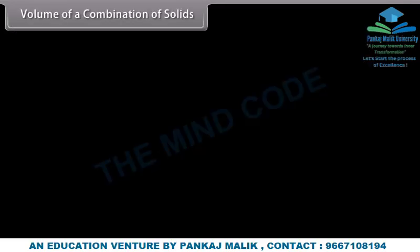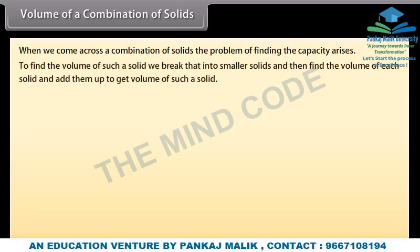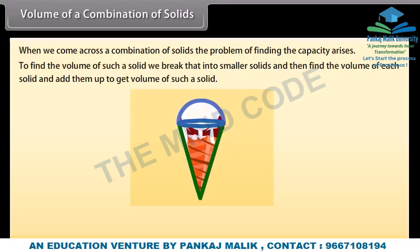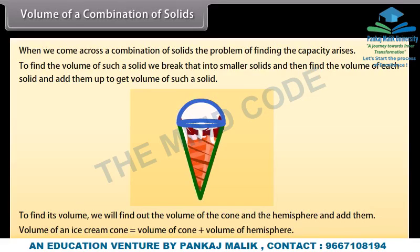Volume of a combination of solids: When we come across a combination of solids, the problem of finding the capacity arises. To find the volume of such a solid, we break it into smaller solids and then find the volume of each solid and add them up. Look at this ice cream cone — it is a combination of a cone and a hemisphere. Volume of the ice cream cone = volume of cone + volume of hemisphere. Let's solve an example to understand more about this.